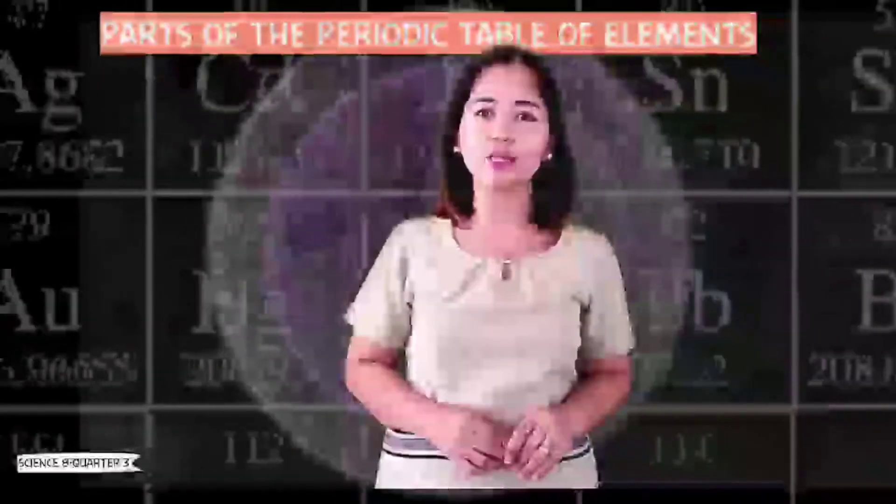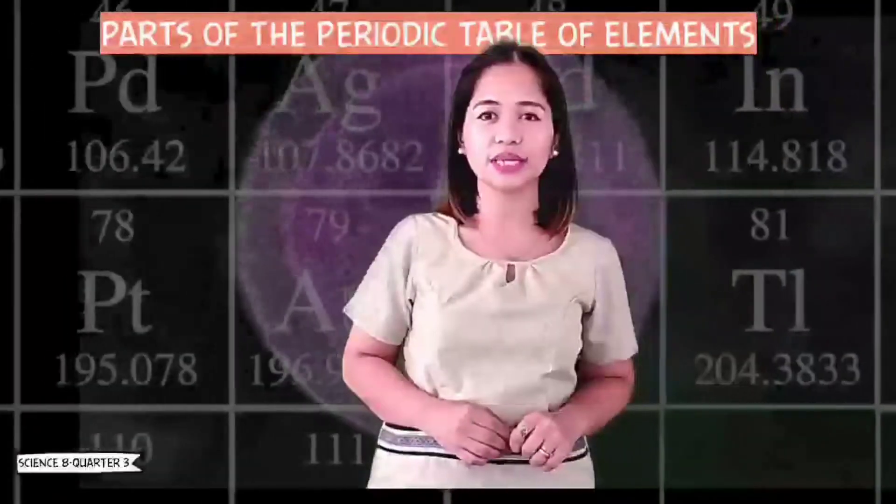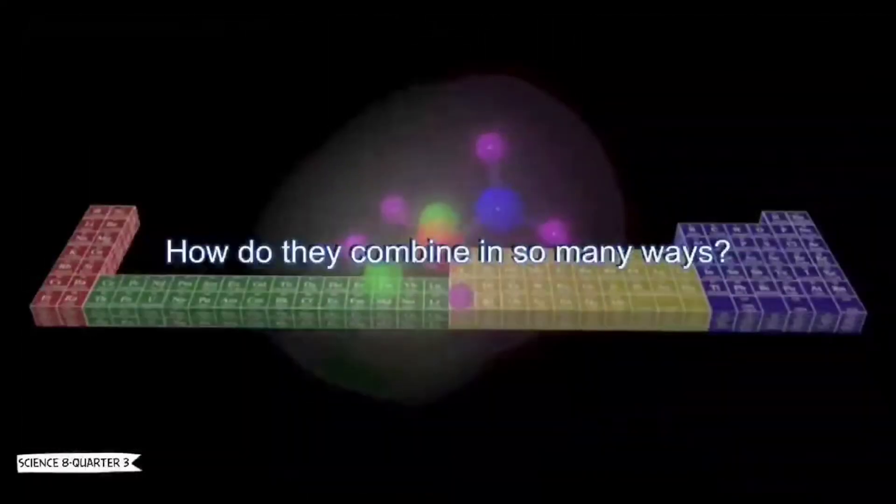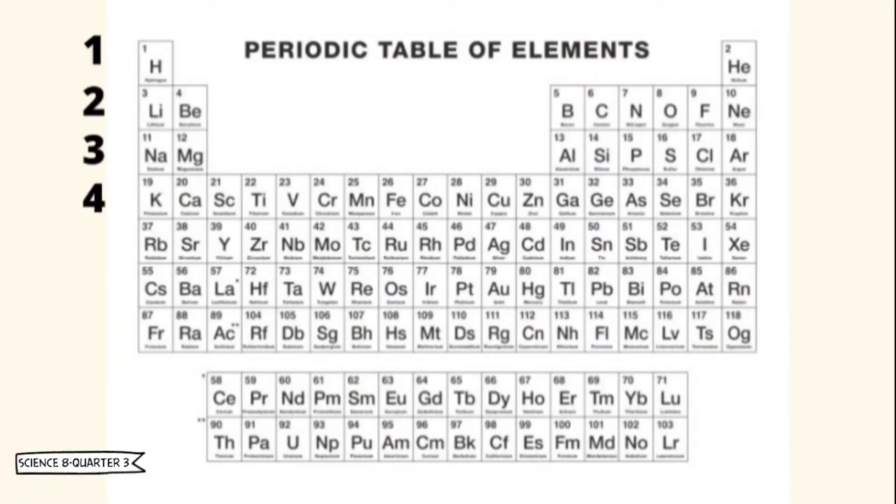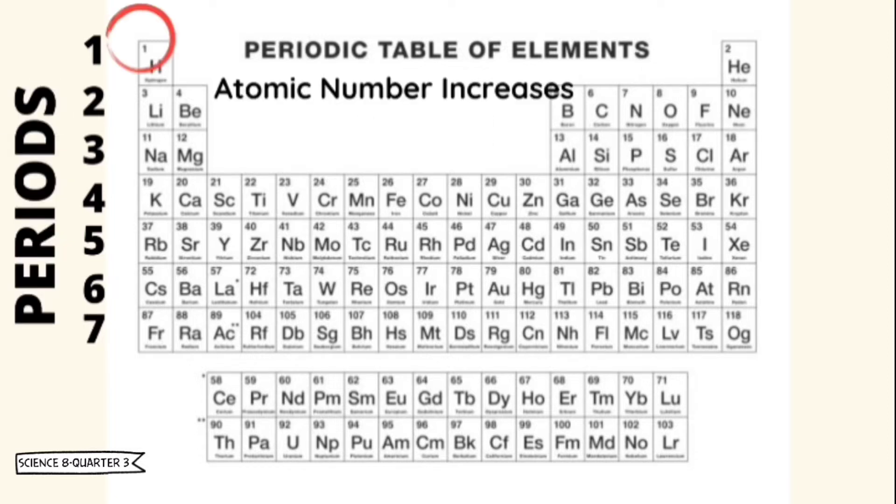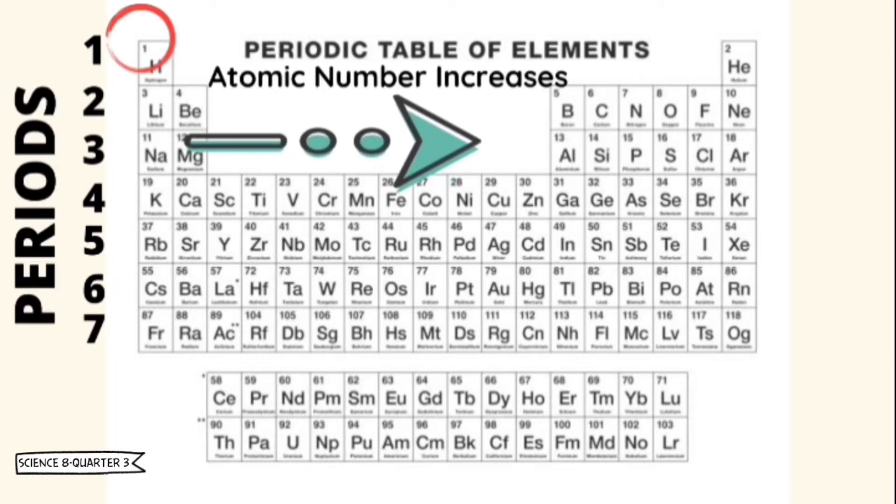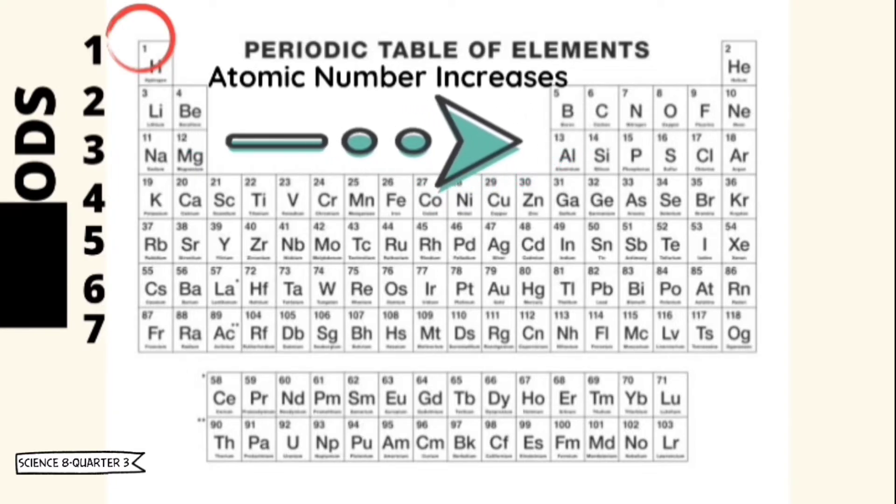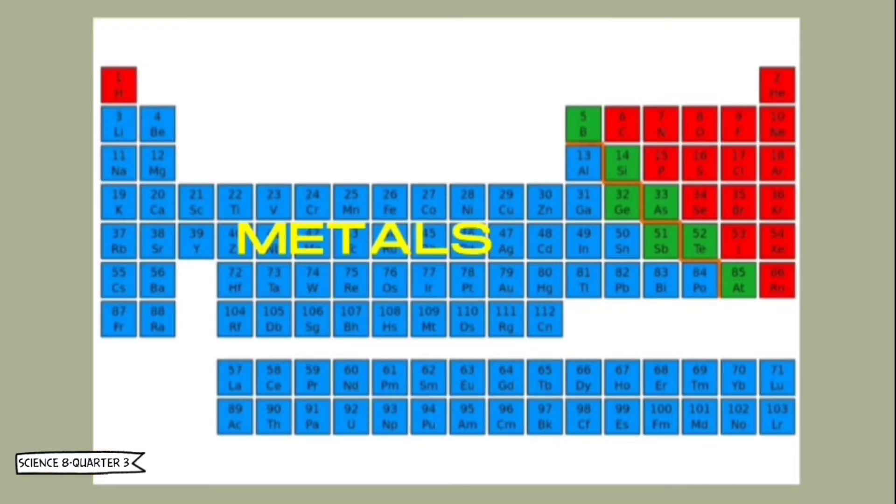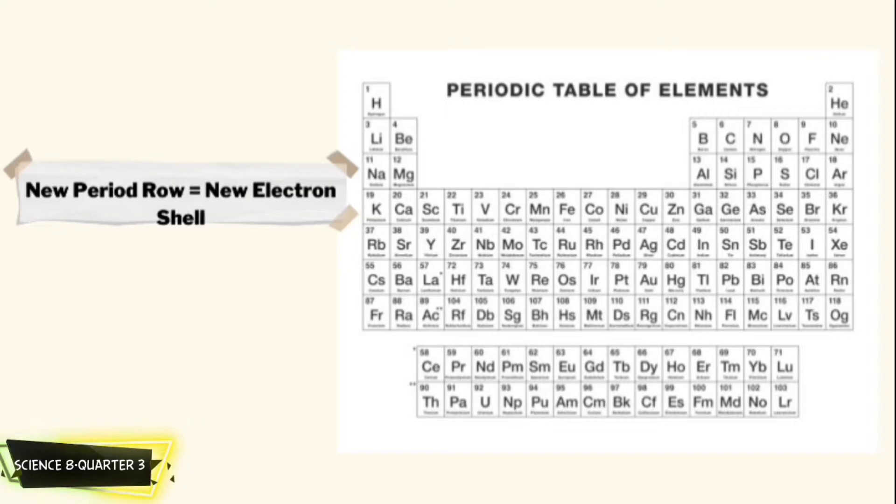So, how are the elements arranged in the modern periodic table of elements? There are seven rows of the periodic table which are called periods. Element atomic number increases moving from left to right across a period. Elements toward the left side of a period are metals, while those on the right side are non-metals. Moving down a period on the table adds a new electron shell.